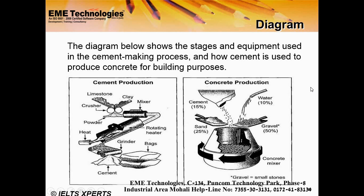In the conclusion, you can note that cement production involves 5 stages, while concrete production involves 11 stages — which simply requires rotating the concrete mixer. This comparison can be written as your conclusion point.